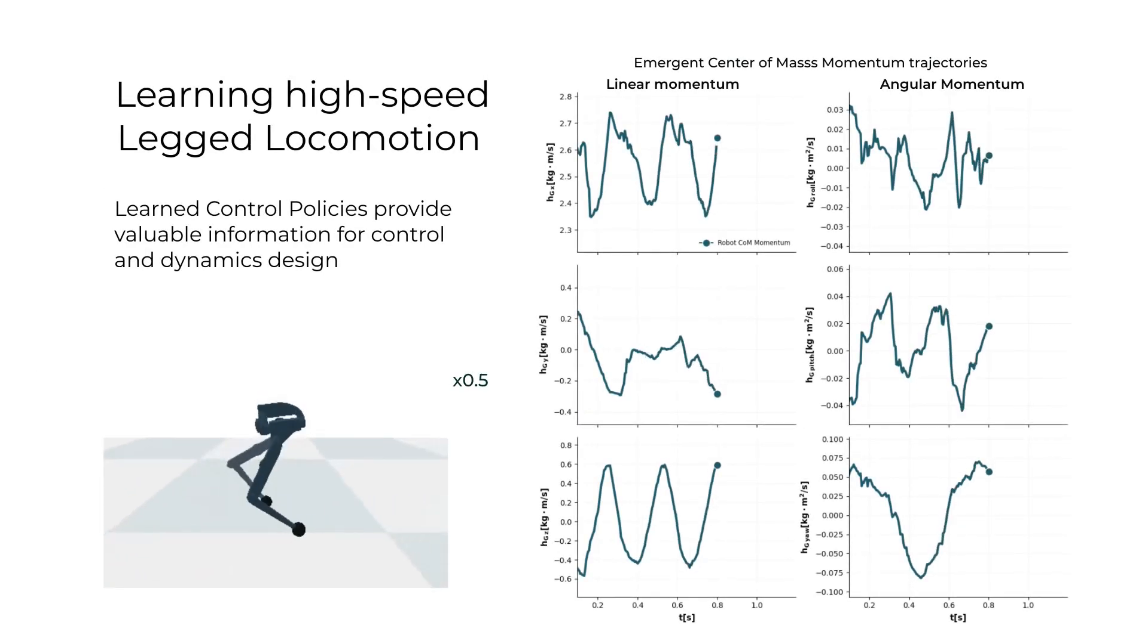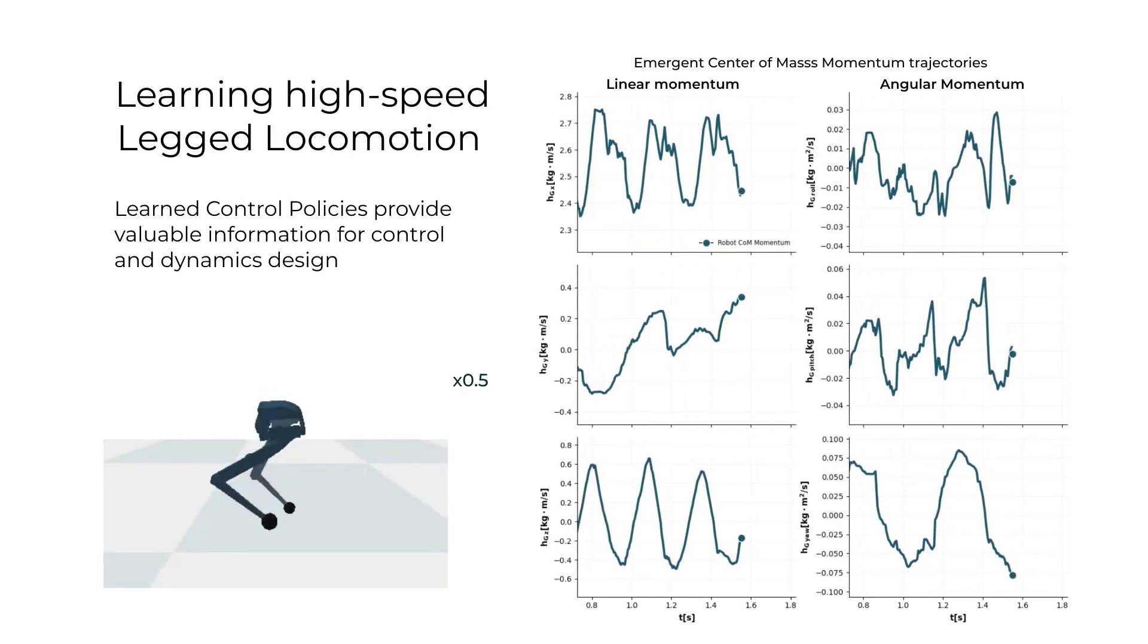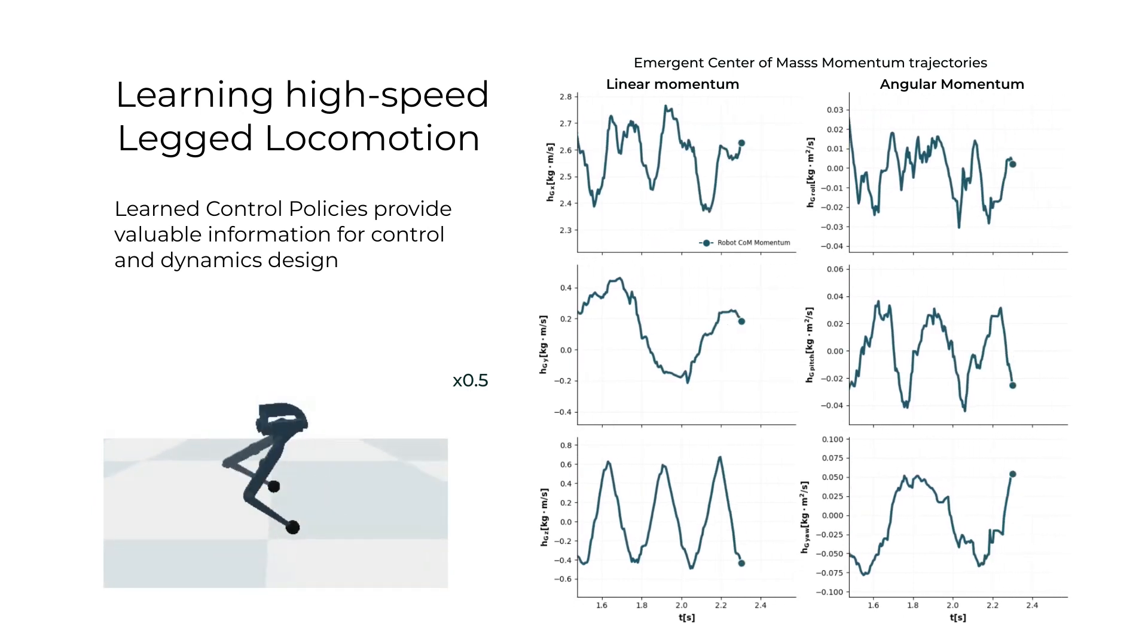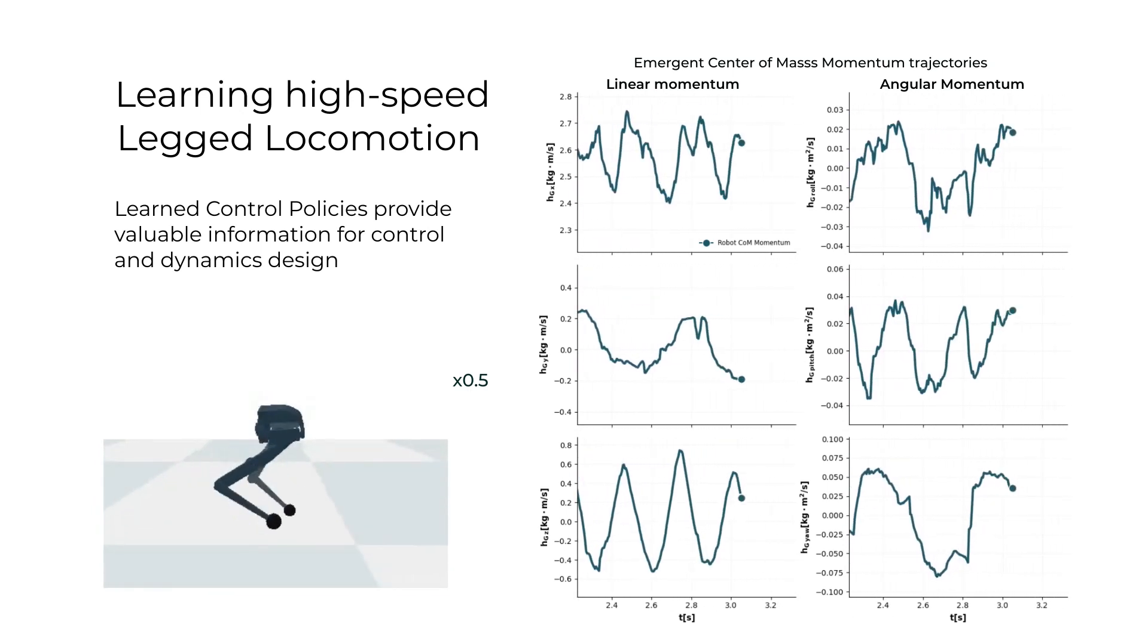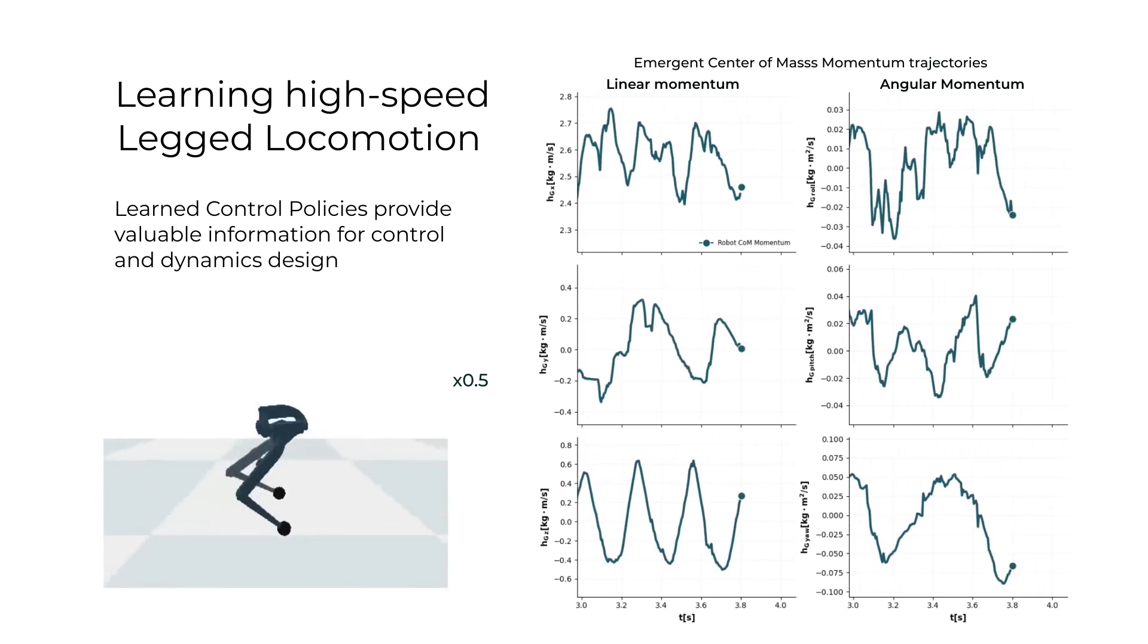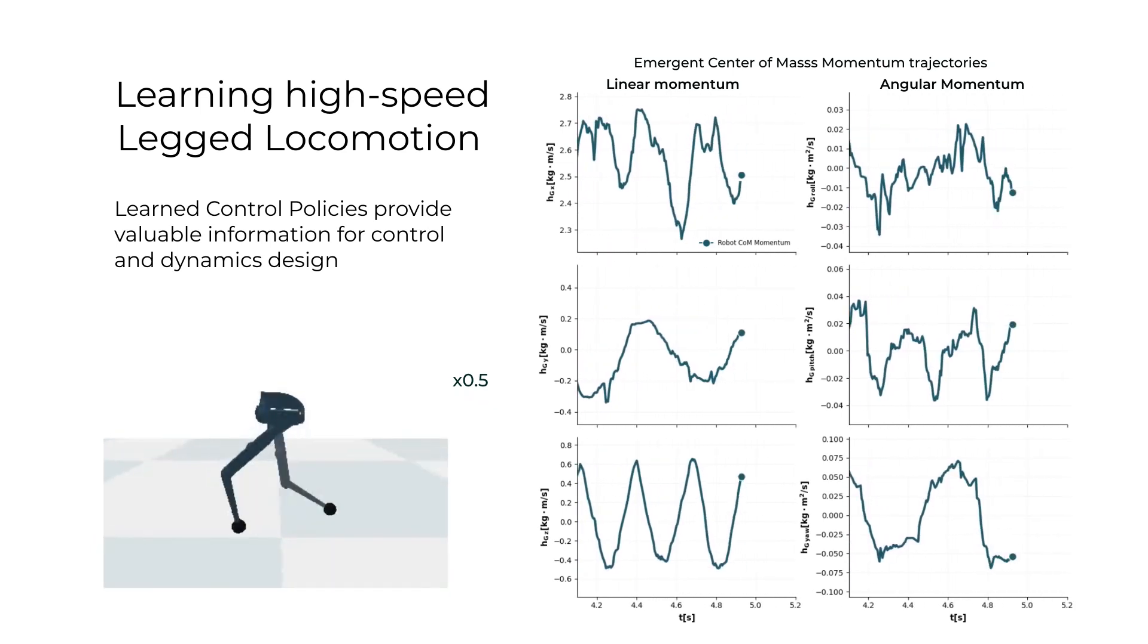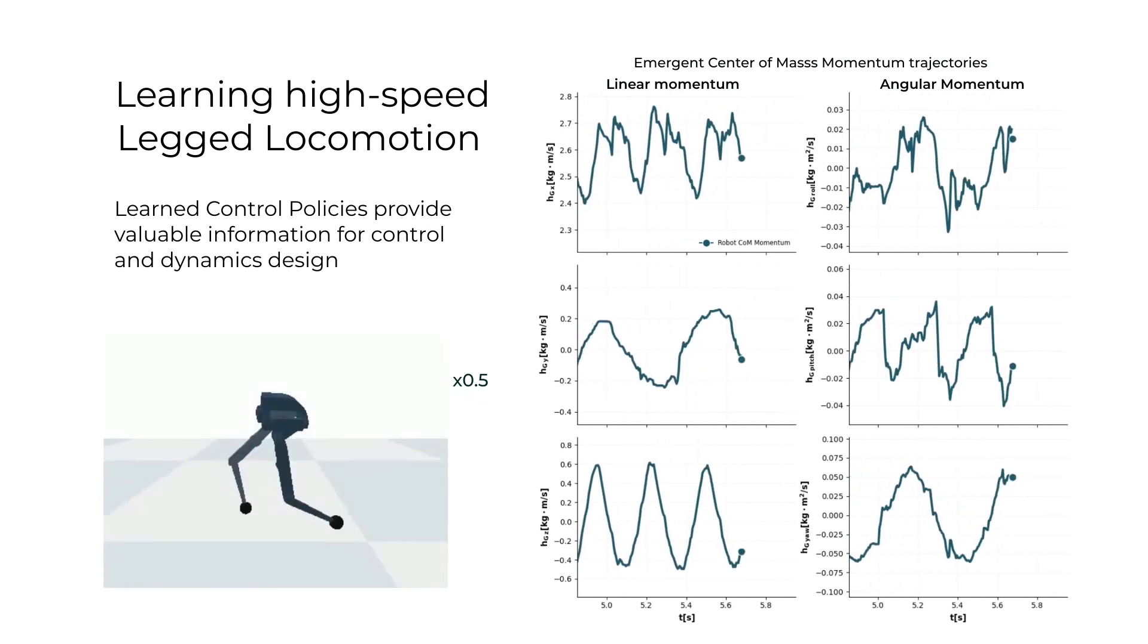An immediate application is the study of the dynamics of our robots at high speeds, having the possibility to extract the base or center of mass linear and angular momentum trajectories for initialization of receding horizon controllers of centroidal or center of mass dynamics.